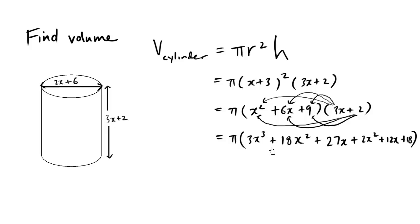I'm going to gather my like terms. I only have 1 cubed here, so I'm just going to copy this down. This is pi times something. So I have 3x cubed. And let me just focus on all the ones with the x squared. So I have a positive 18x squared and I have a positive 2x squared. So positive 18 and positive 2 make positive 20x squared.